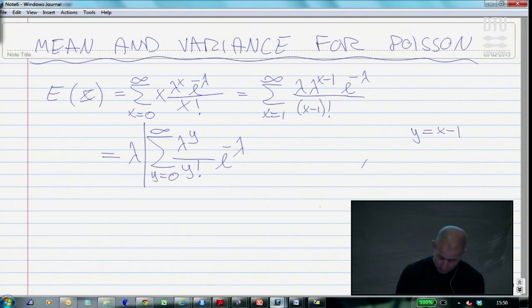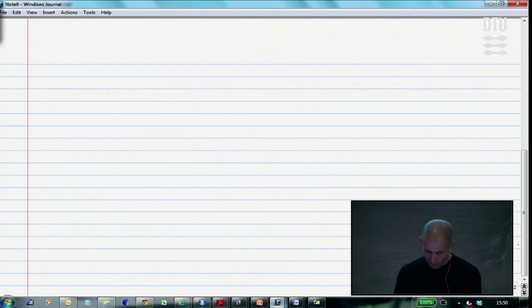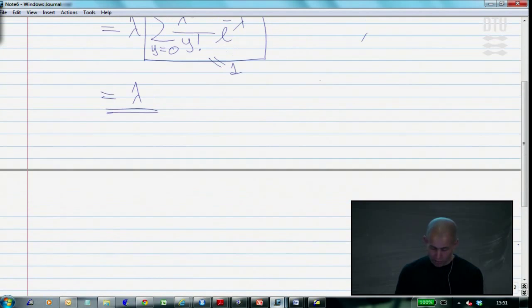because here we recognize a full summation of all binomial, sorry, Poisson probabilities, which equals up to 1. So we're left with the simple result for the Poisson, that the mean is just the lambda. So let's move straight on to finding the variance.